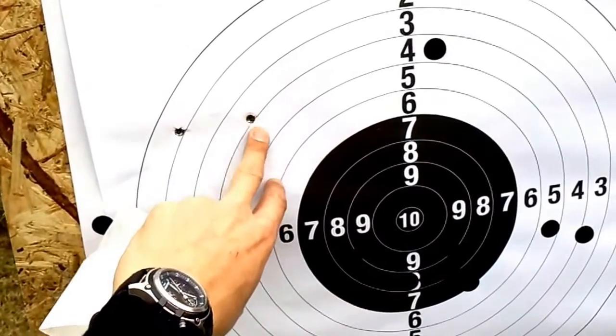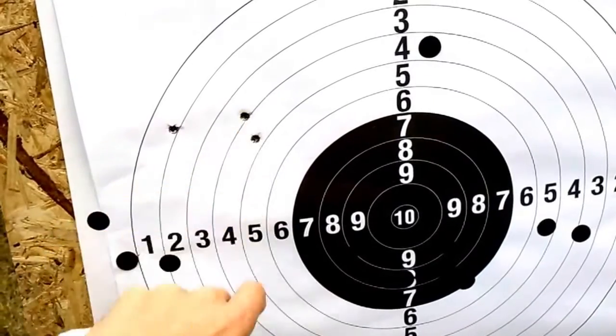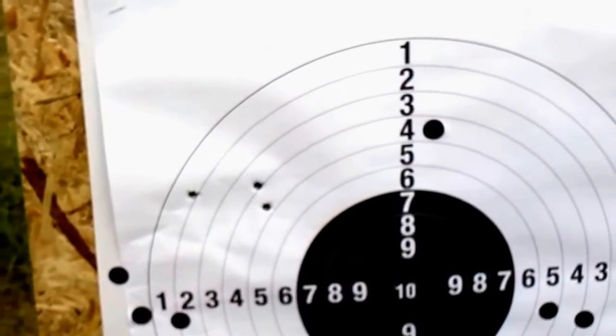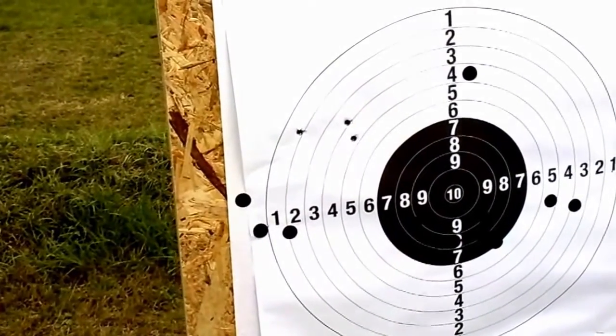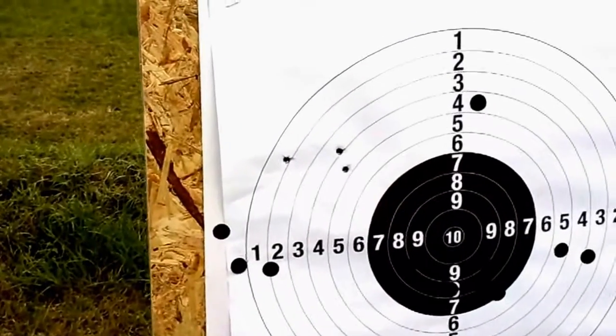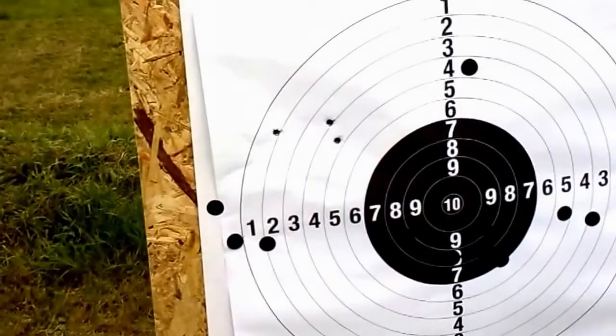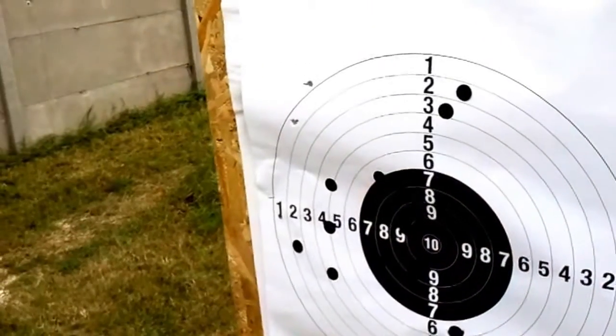These two shots are almost, they are less than one MOA actually. So I believe within a practice an FN FAL can actually and will shoot under one MOA or close, but two minute of angles, two inches are perfectly achievable with an average quality ammo, but not with Wolf.